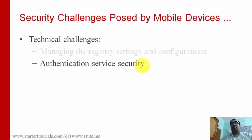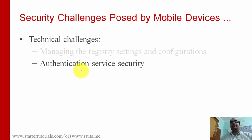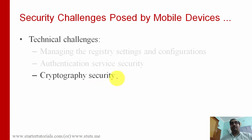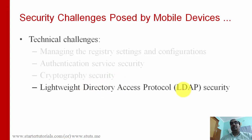Another technical challenge is authentication service security. Before accessing any application, the user needs to be authenticated — that is, identified. Typically we do authentication using usernames and passwords, or we can use biometrics like fingerprint or retinal scan. Another challenge is cryptography security, which is used specifically for maintaining the confidentiality property of the system using encryption and decryption.